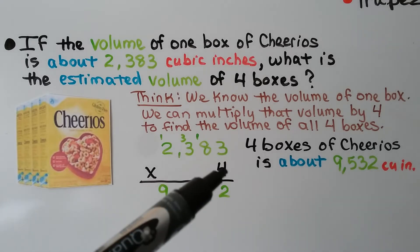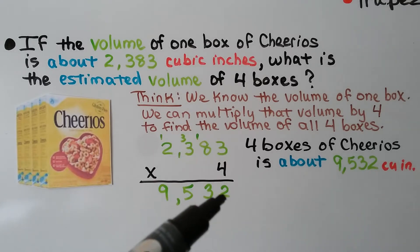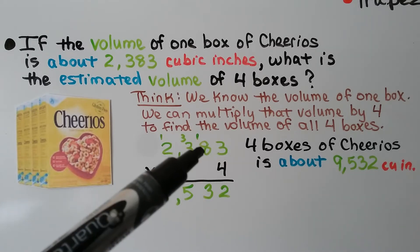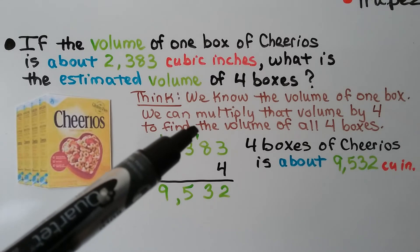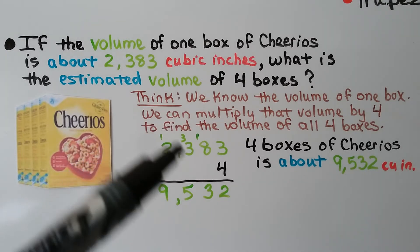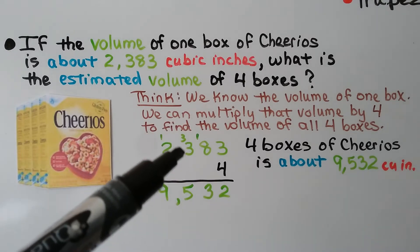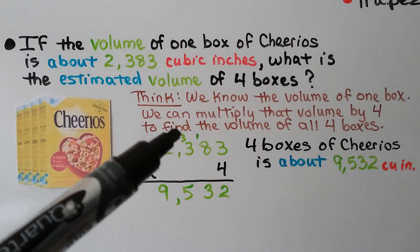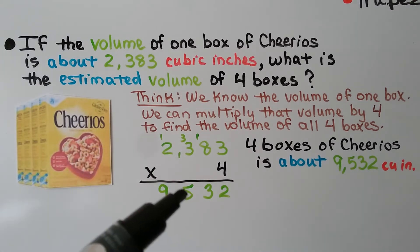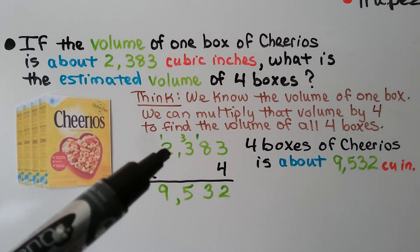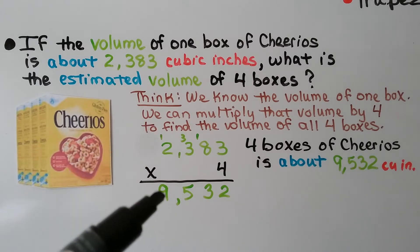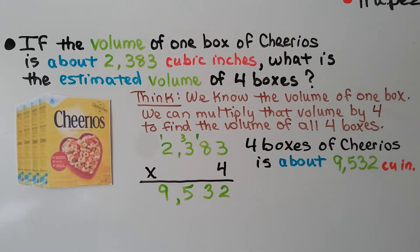4 times 3 is 12, regroup the 1, put the 2 down. 4 times 8 is 32, plus 1 more is 33, regroup the 3, put the 3 down. 4 times 3 is 12, plus 3 more is 15, regroup the 1, put the 5 down. 4 times 2 is 8, plus 1 more is 9. The 4 boxes of Cheerios is about 9,532 cubic inches.